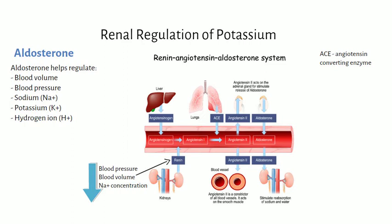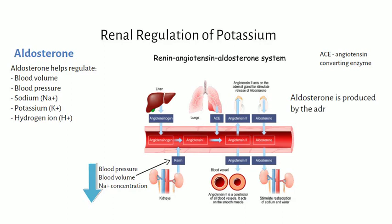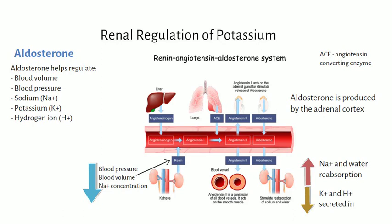Angiotensin-converting enzyme converts angiotensin 1 into angiotensin 2. Angiotensin 2 has two effects: it acts on vascular smooth muscle to cause vasoconstriction, which increases blood pressure, and it stimulates the adrenal gland to release aldosterone. Aldosterone then travels to the kidneys, where it increases sodium and water reabsorption, thereby increasing blood volume and blood pressure, and decreases blood potassium and hydrogen ion by secreting them into the urine.